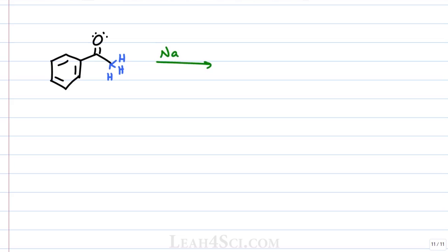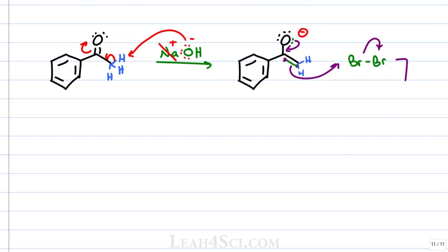The reaction starts out like a simple base promoted alpha halogenation. Remember NaOH is Na plus positive spectator so get rid of it and the OH minus is the base that is going to grab the alpha hydrogen creating an enolate intermediate. We'll use Br2 as the halogen for this example and in the next step we have the enolate collapsing back down and the first halogen being added to the molecule.